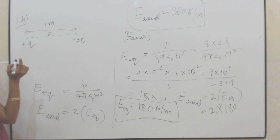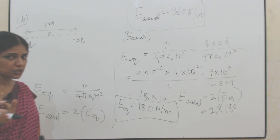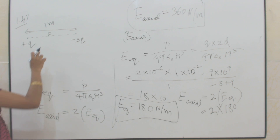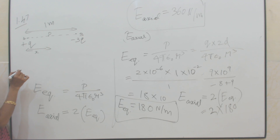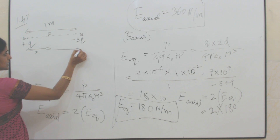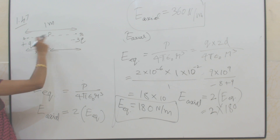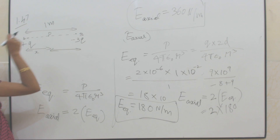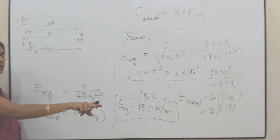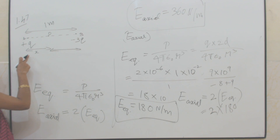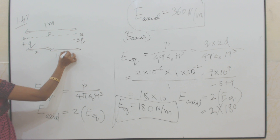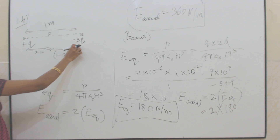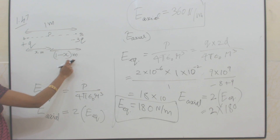Let O be the point where the potential is zero. We do not know at what point the potential is zero, so we assume O is that point. Let A and B be the two point charges. Let O be at a distance x from the charge +q. Since the total separation is 1 meter, the distance from O to the charge -3q will be (1 - x) meters.